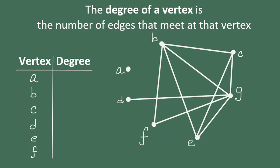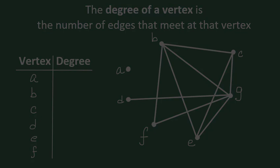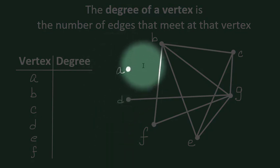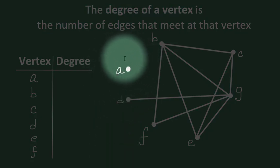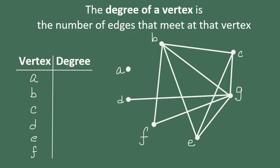Here we've listed all of the vertices and we're going to determine their degrees. Vertex A is interesting because notice that no edges actually meet at vertex A. So that means that the degree of vertex A is actually zero.